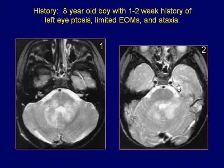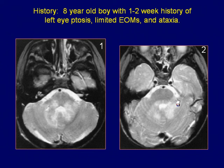Axial T2-weighted images of the posterior fossa demonstrate a patchy area of white matter hyperintensity surrounding the fourth ventricle, involving the brainstem and cerebellum bilaterally.